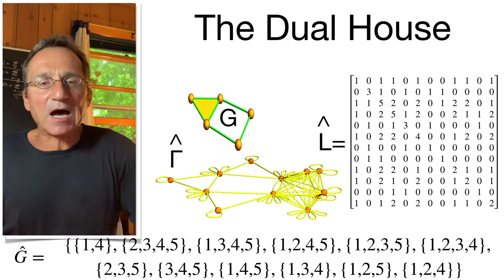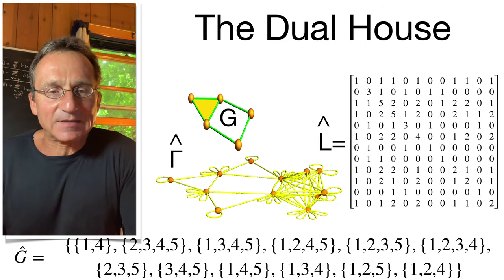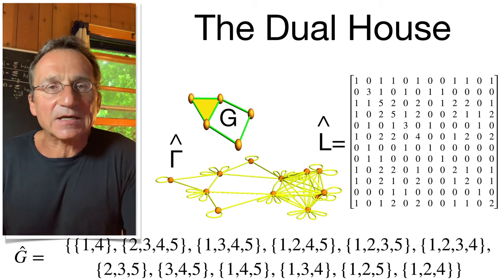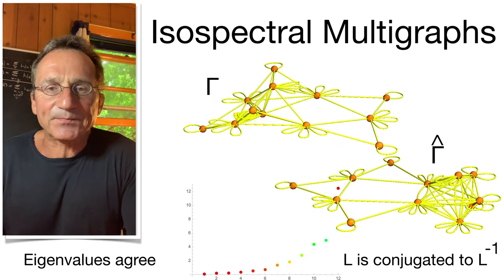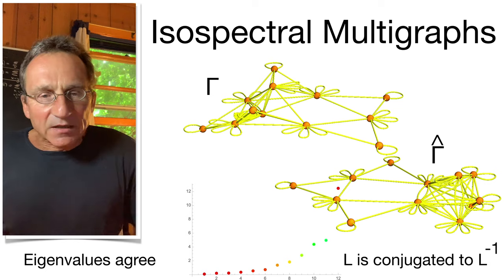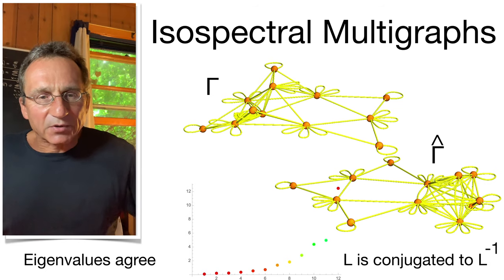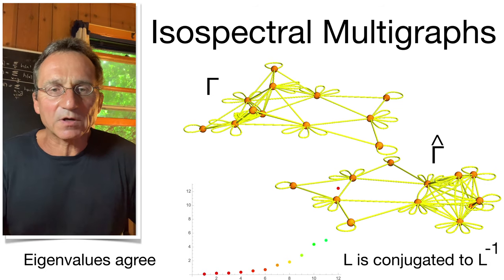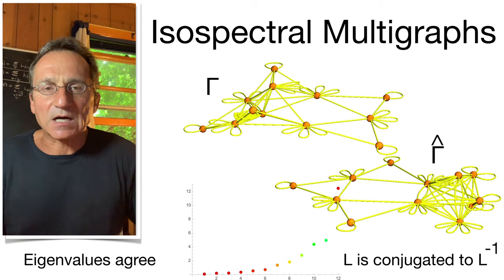Here's the dual house, dual graph. It's not isomorphic, but it has the same spectrum. In the middle, you see the eigenvalues which were computed. They are the same, both for gamma and gamma-hat.